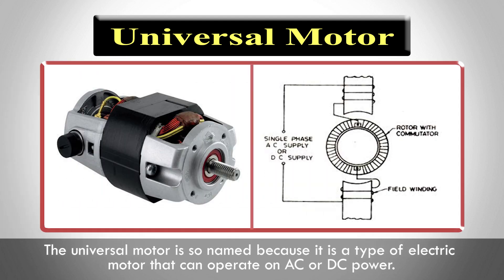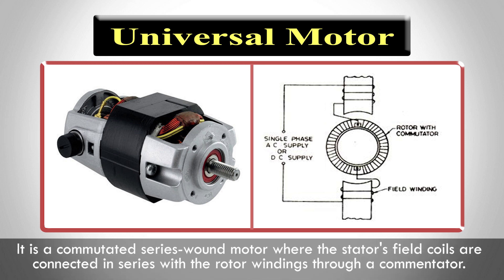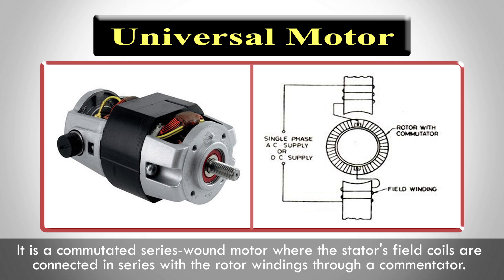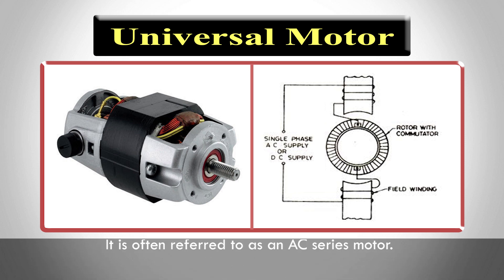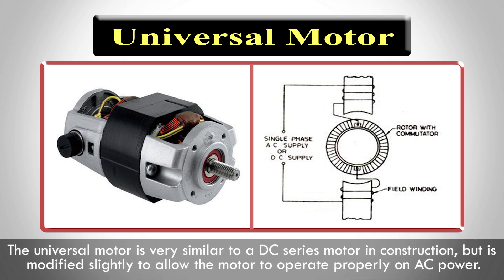The universal motor is so named because it is a type of electric motor that can operate on AC or DC power. It is a commutated series-wound motor where the stator's field coils are connected in series with the rotor windings through a commutator. It is often referred to as an AC series motor, and is very similar to a DC series motor in construction, but modified slightly to allow proper operation on AC power.